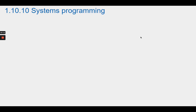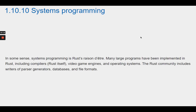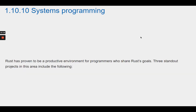Section 1.10.10 Systems Programming. In some sense, systems programming is Rust's raison d'être. Many large programs have been implemented in Rust, including compilers, Rust itself, video game engines, and operating systems. The Rust community includes writers of parser generators, databases, and file formats. Rust has proven to be a productive environment for programmers who share Rust's goals. Three standout projects in this area include the following.